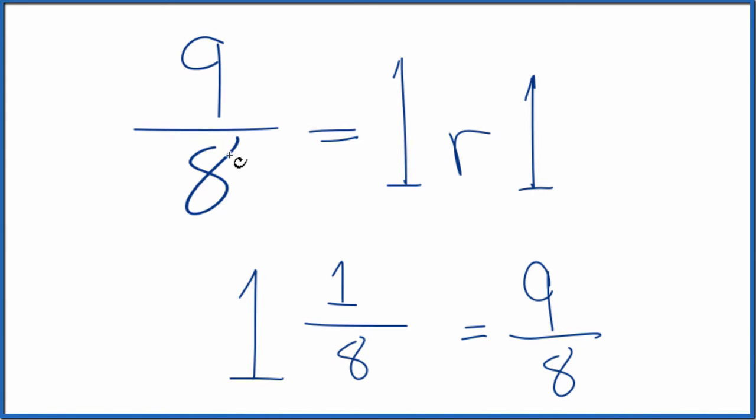So to recap, we divided 9 by 8, we got 1 remainder 1. The whole number goes here. The remainder becomes our numerator, and then we take our original denominator, put that down there. We're done. 9 eighths is equivalent to the mixed number 1 and 1 eighth.